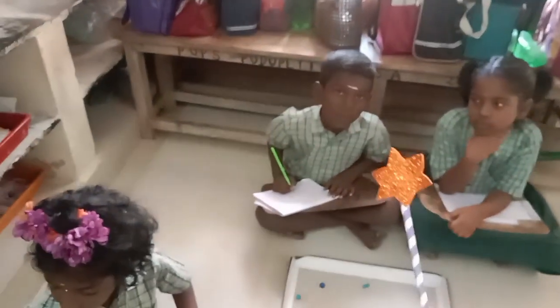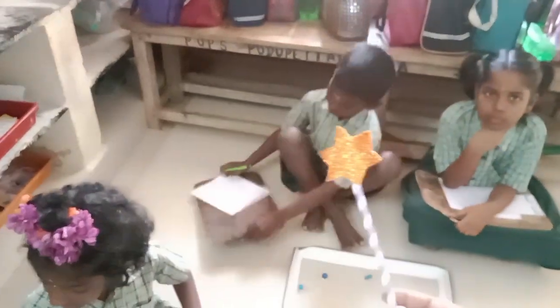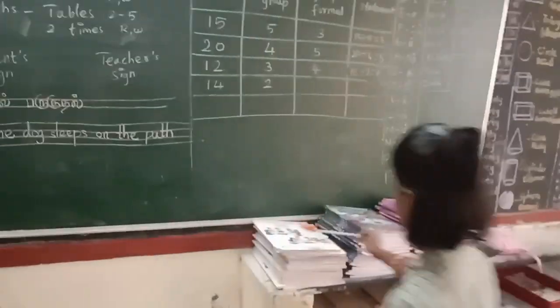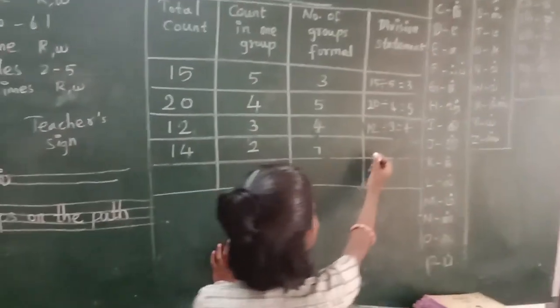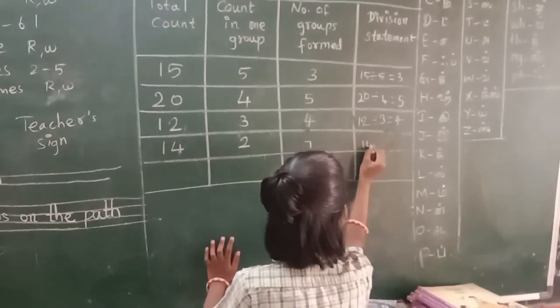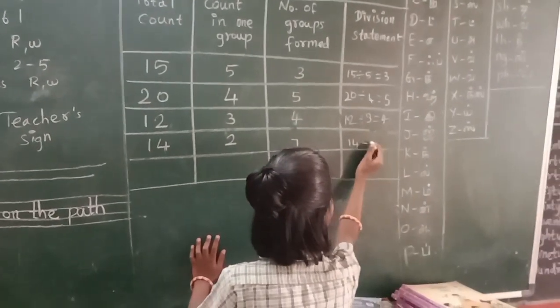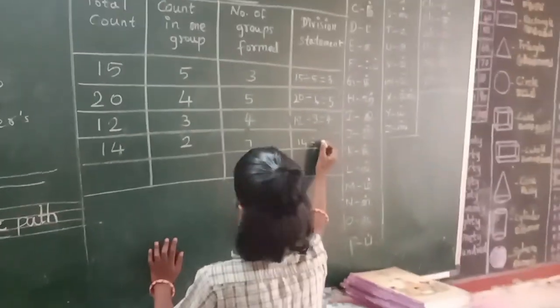Second. Third. Kirthivasan. Very good — go and write the answer on the board. Total count is 14, one group is 2, there are seven groups. Seven — division factor. Very good.